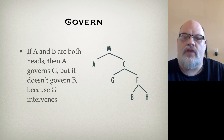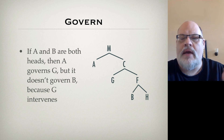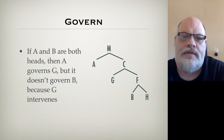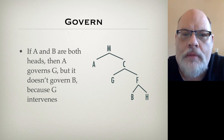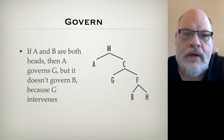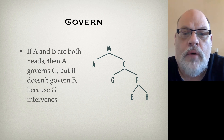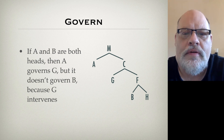Now, if G was another category — say G was a phrase — then A may well govern B in that circumstance, which makes it a little tricky. Government was a very popular structural relationship back in the late 1980s and early 90s. It was used as a mechanism for indicating what we call licensing relationships — relationships where you need one item to be in a particular structural configuration with another in order to be grammatical.